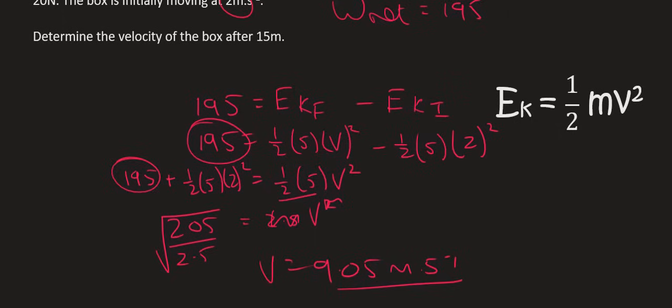So this object was initially moving at 2 meters per second. Then energy was added to the object. Yes, there was friction, but luckily the pulling force was enough to overcome that. And so the pulling force causes the object's velocity to become 9.05.